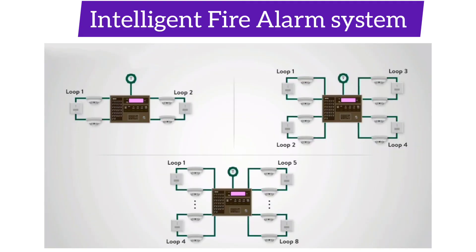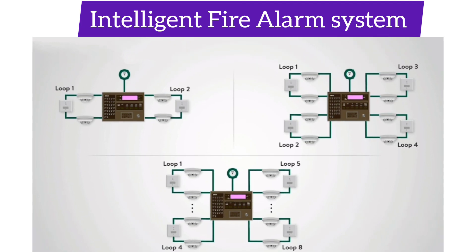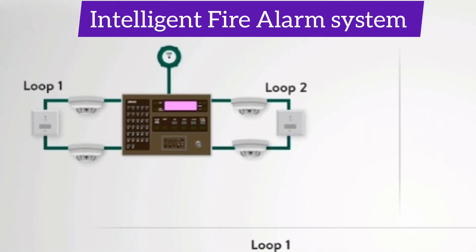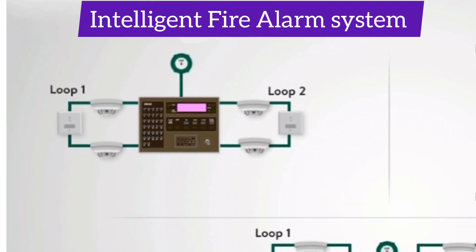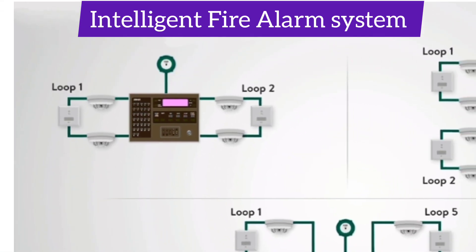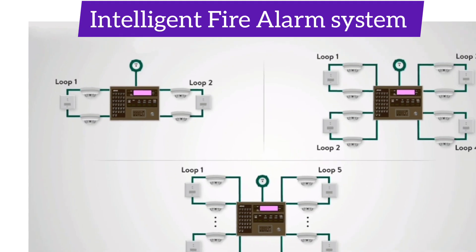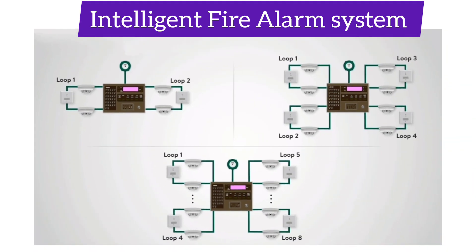Intelligent fire alarm system. In an intelligent fire alarm system, each detector effectively incorporates its own computer which evaluates the environment around it and communicates to the control panel whether there is a fire, fault, or the detector head needs cleaning. Essentially, intelligent systems are far more complex and incorporate far more facilities than conventional or addressable systems. Their primary purpose is to help prevent the occurrence of false alarms.